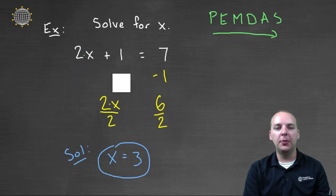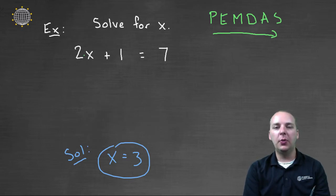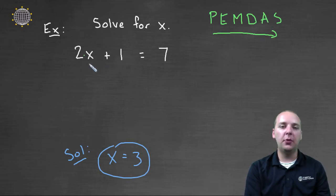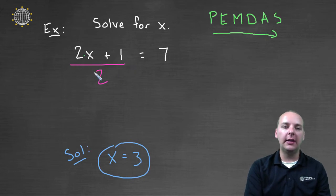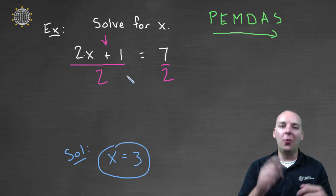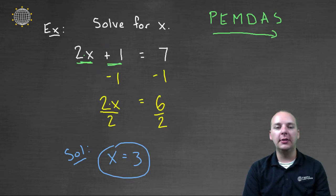Before we go into the next example, let me show you what would go wrong if we did these in the wrong order. What if we looked at this equation and said x is being multiplied by two, so I'm going to divide by two? First of all, if you divide by two it has to be the entire left-hand side — you can't just divide one term by two. So you divide both sides by two, but now you're stuck because the twos won't cancel because of this addition. The one had to go away before we divided by two. That's why you have to be extremely careful about what order you're undoing these operations.